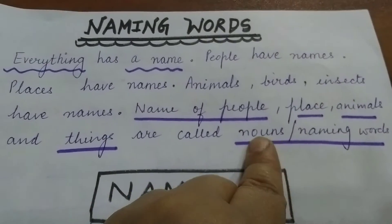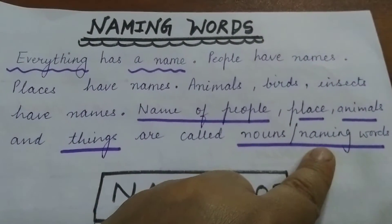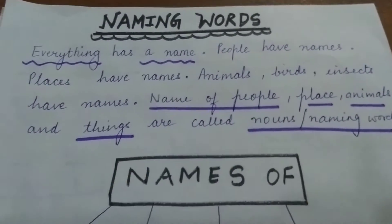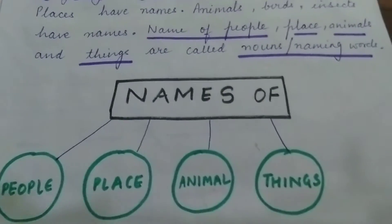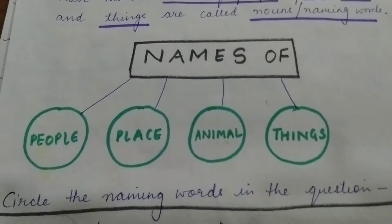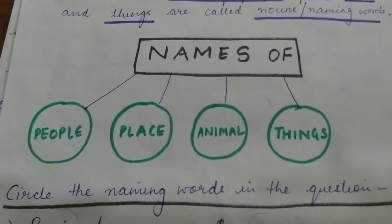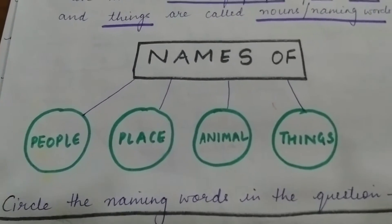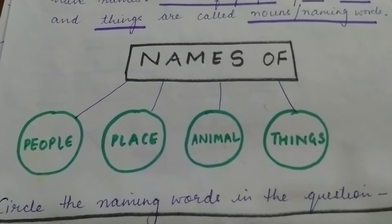Naming words and noun both are the same thing. So with the help of a flow chart, you can see — people, place, animal, things are naming words.